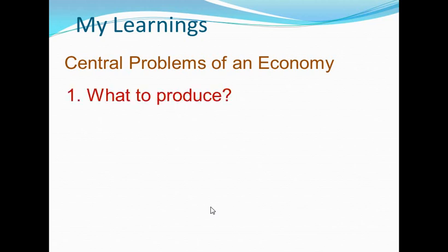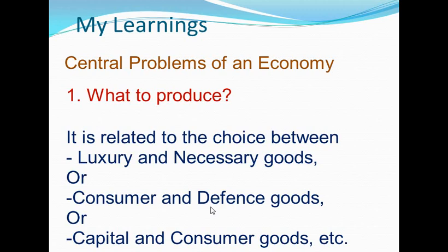First: what to produce. The problem of what to produce involves selection of goods and services to be produced, as well as quantities in which they should be produced. It is related to the choice between luxury and necessary goods, or consumer and defense goods, or capital and consumer goods, etc. As the available resources are limited, all the goods can't be produced in the quantity desired by us. Hence this problem.